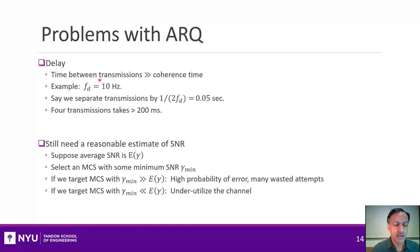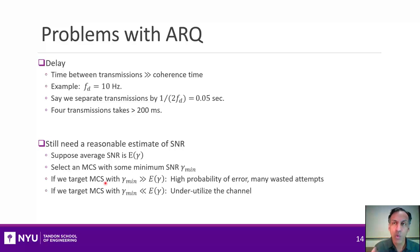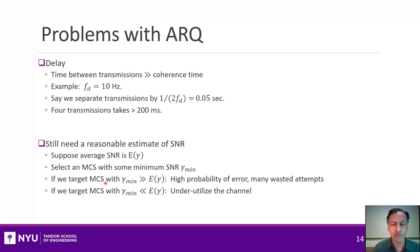The second issue is that you still need a reasonable estimate of the SNR somehow. If we target an MCS that is too high, most transmissions will fail — many wasted channel attempts, not utilizing the resource well. On the other hand, if we're too conservative to ensure a high passing probability, we could underutilize the channel. For example, if the average SNR is 10 or 15 dB but we target something at zero or five, most of the time we could have achieved a higher rate.